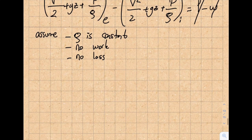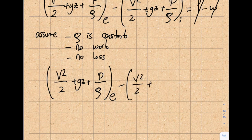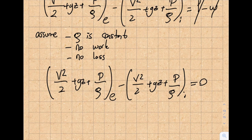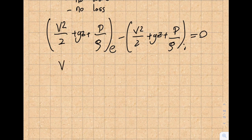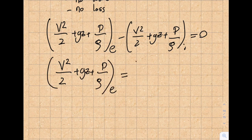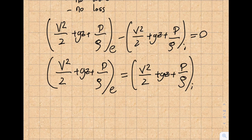So simply, v²/2 + gz + p/ρ at the exit minus v²/2 + gz + p/ρ at the inlet turns out to be zero. Moving one side to the other, we get: v²/2 + gz + p/ρ at the exit equals v²/2 + gz + p/ρ at the inlet. This is the energy term, and I'm saying the exit and inlet have the same magnitude.